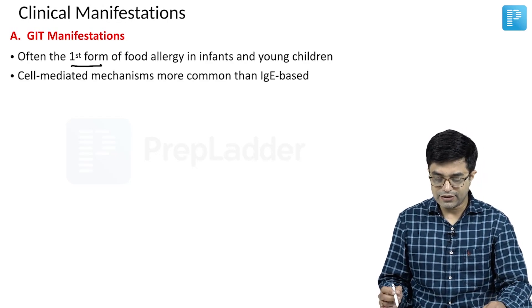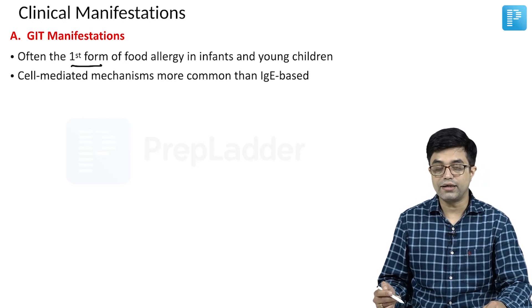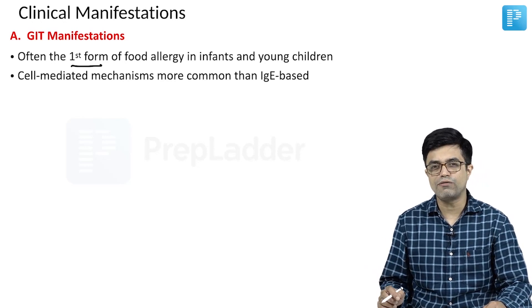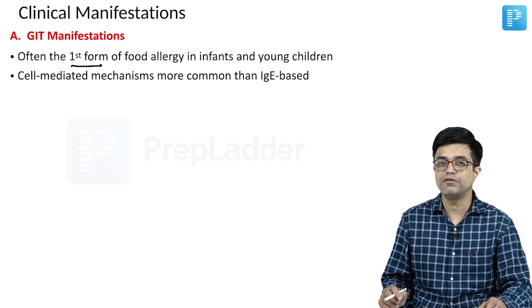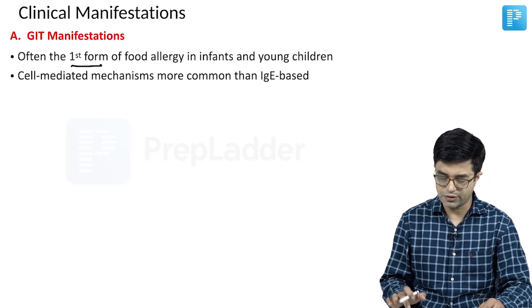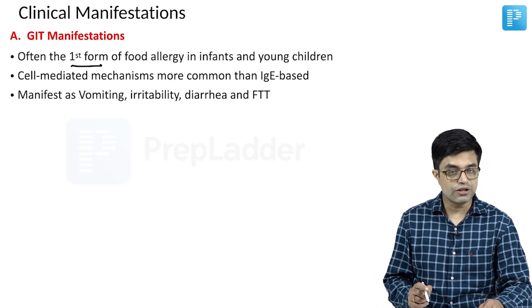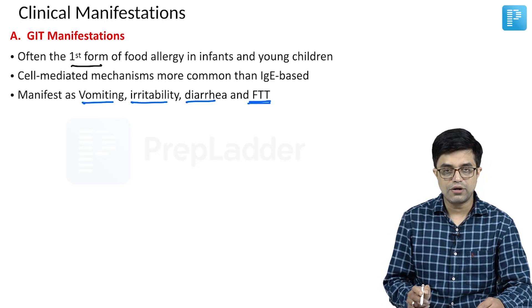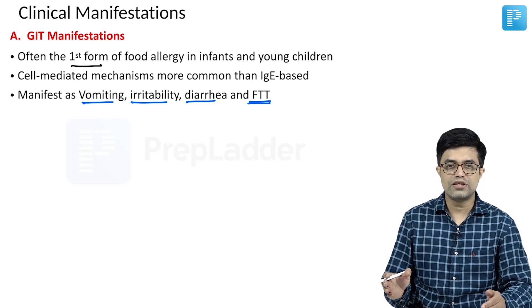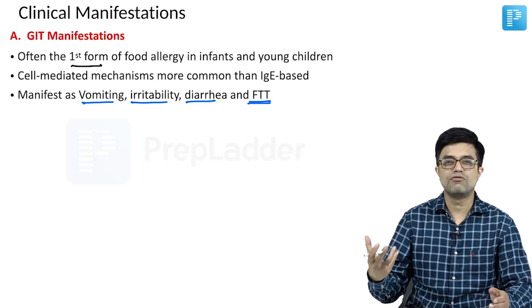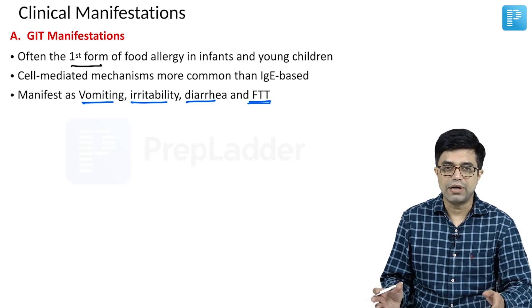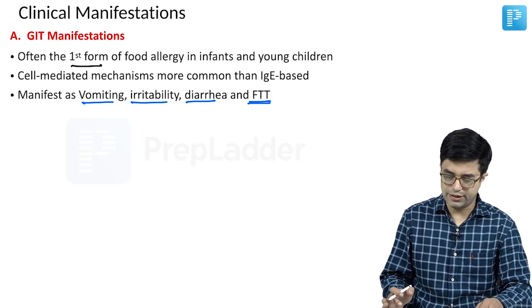Cell mediated mechanisms are found to be more common than IgE based mechanisms. So your IgE based tests are often found to be useless in majority of these reactions. Most of the GI early manifestations will be in the form of vomiting, irritability, diarrhea and failure to thrive. Although the older children may have slightly more widespread manifestations which may be related to malabsorption, diarrhea, abdominal pain, etc.